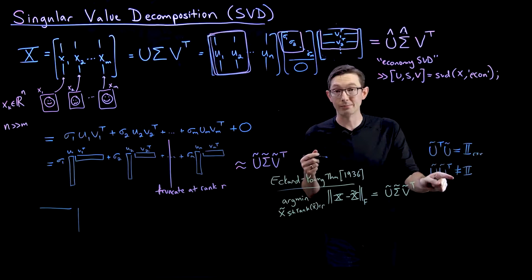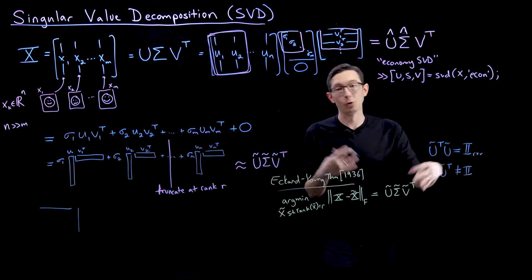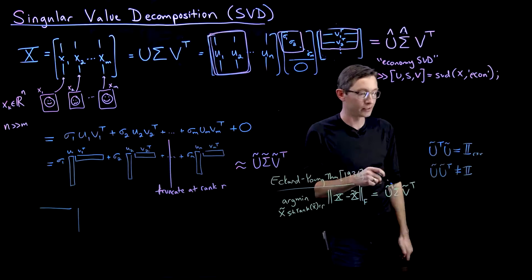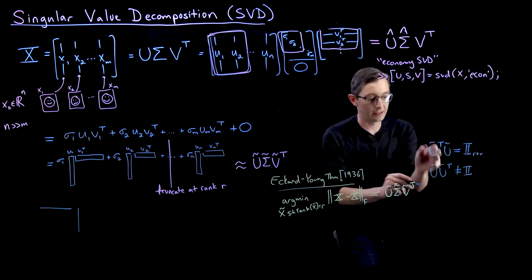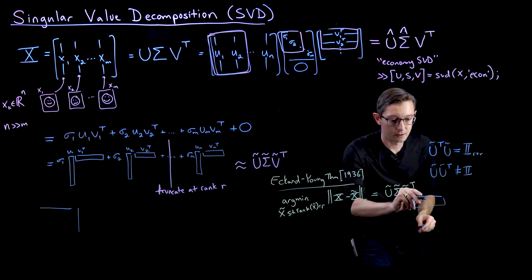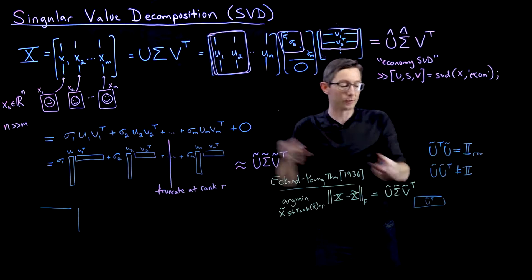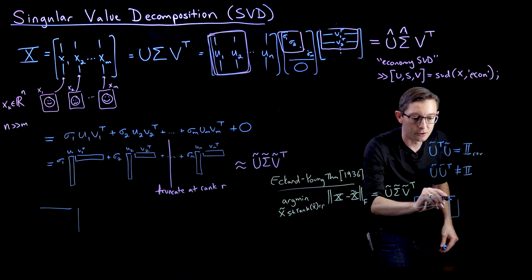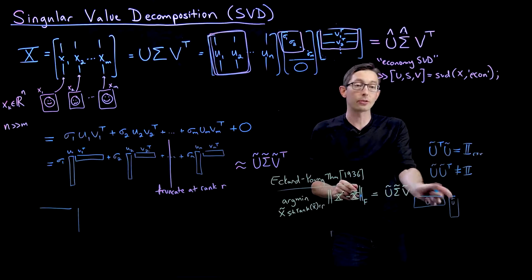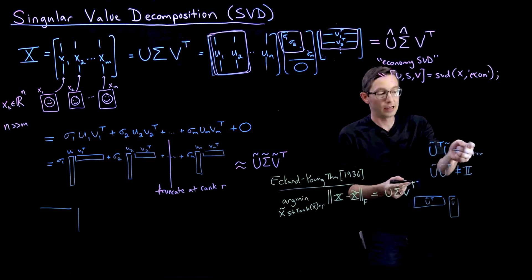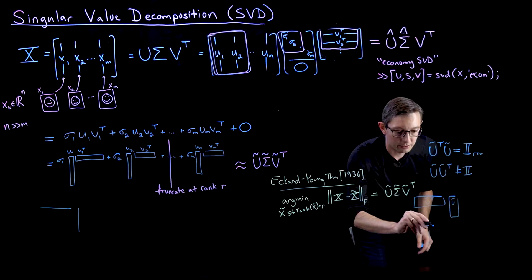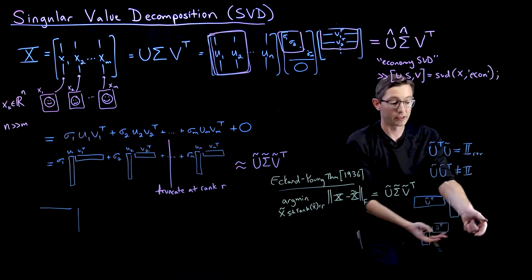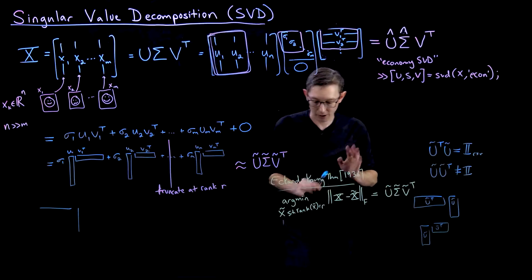Many people — myself included — are guilty of forgetting this basic fact and producing wrong proofs as a result. The columns of U-tilde are still orthogonal, so U-tilde ᵀ·U-tilde still gives the identity matrix. But U-tilde·U-tilde ᵀ is a big N×N square matrix of rank R, and it is definitely not equal to the identity matrix.